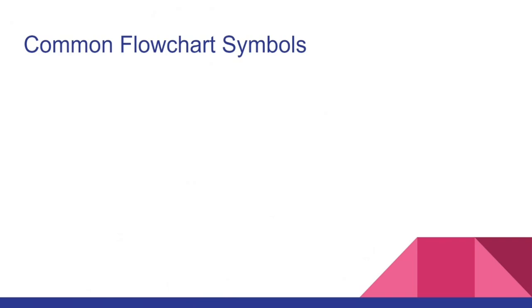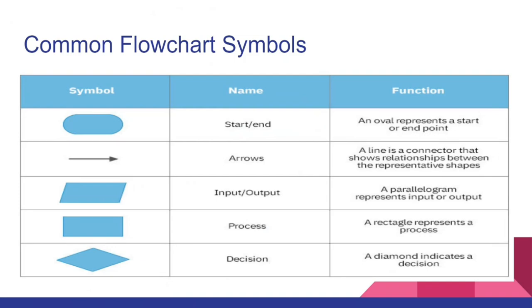We are going to look at common flowchart symbols. On our left side we have the symbols, the names, and the functions. The first symbol is called start or end - it represents a start or end point. An arrow or line is a connector that shows the relationship between shapes. A parallelogram represents input and output. A rectangle represents a process. And a diamond indicates a decision.